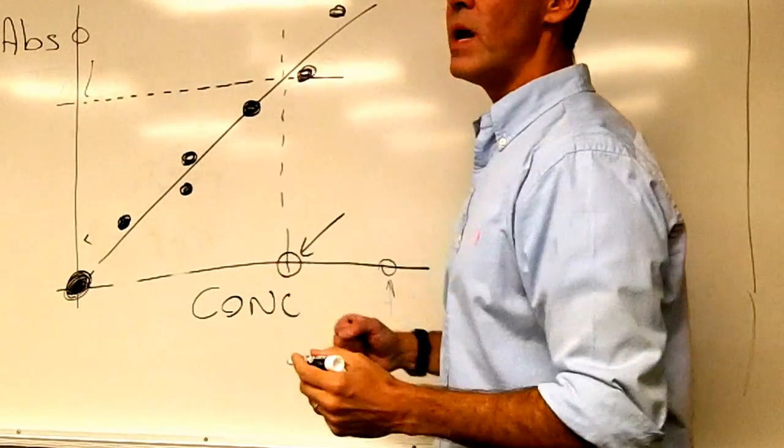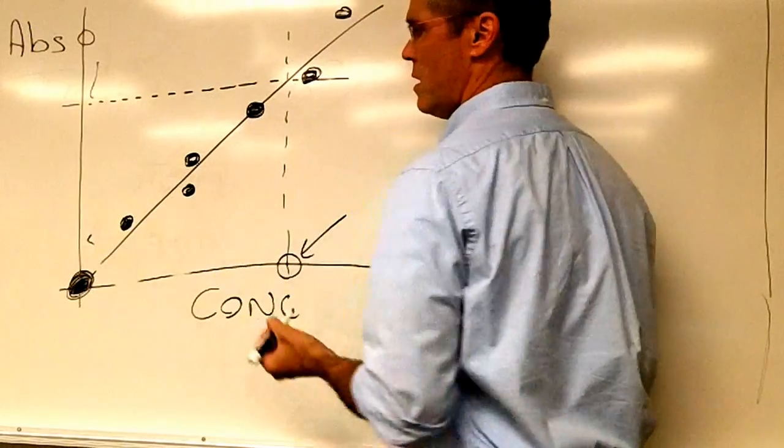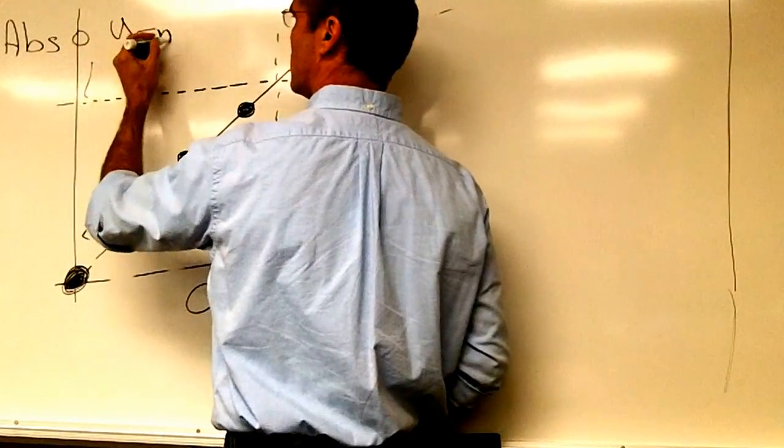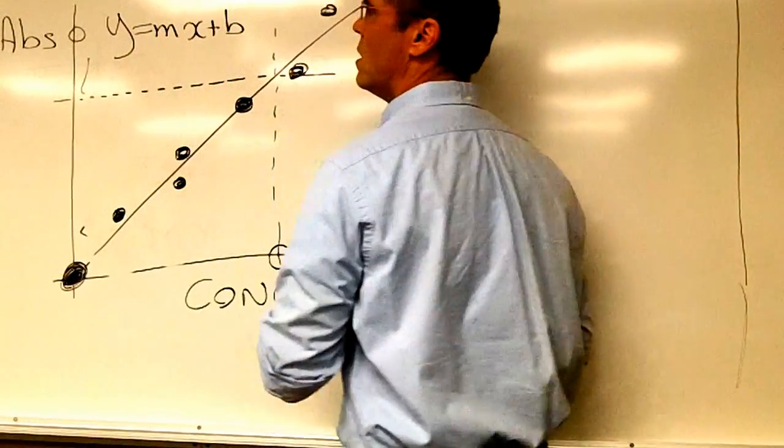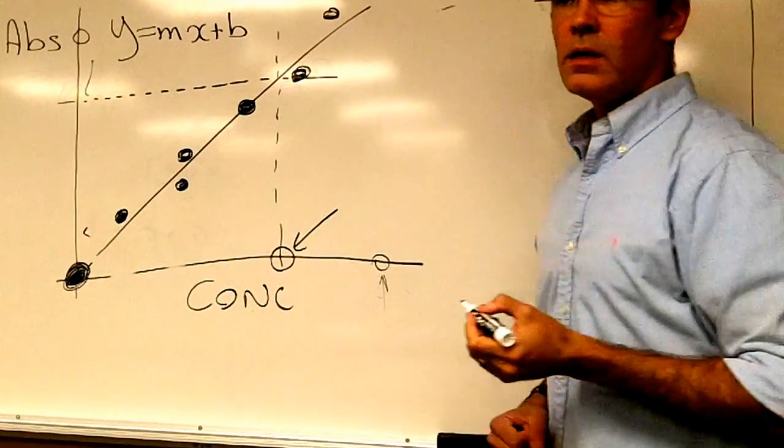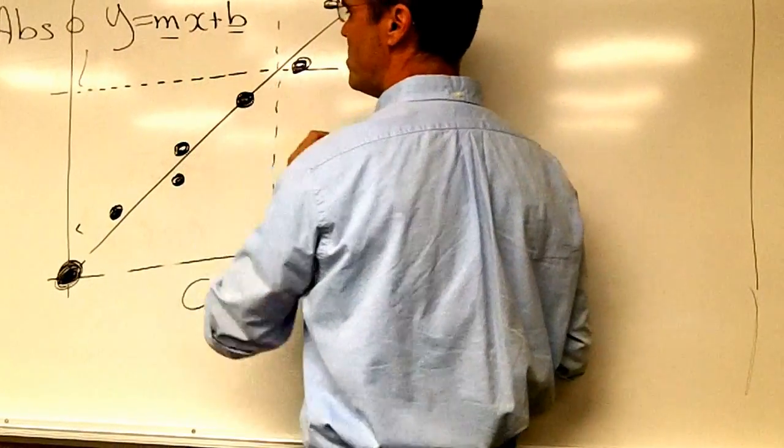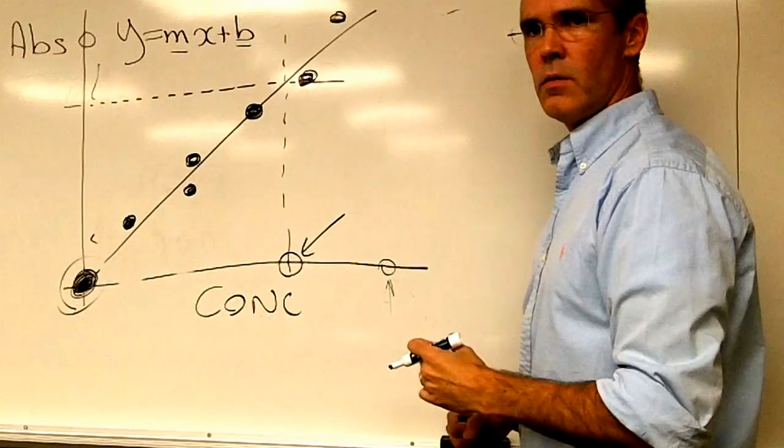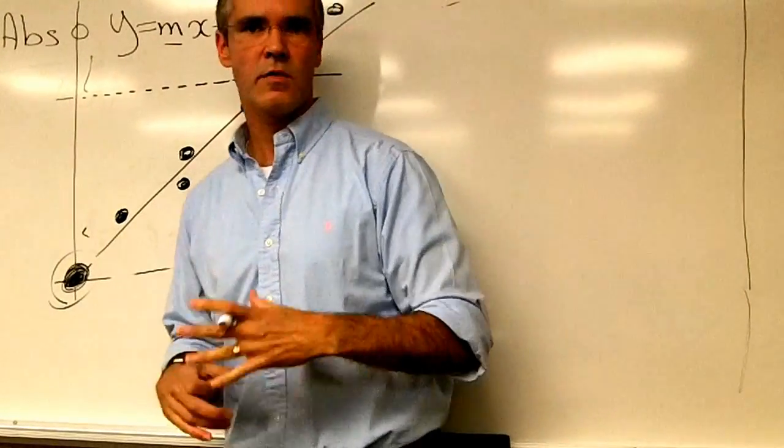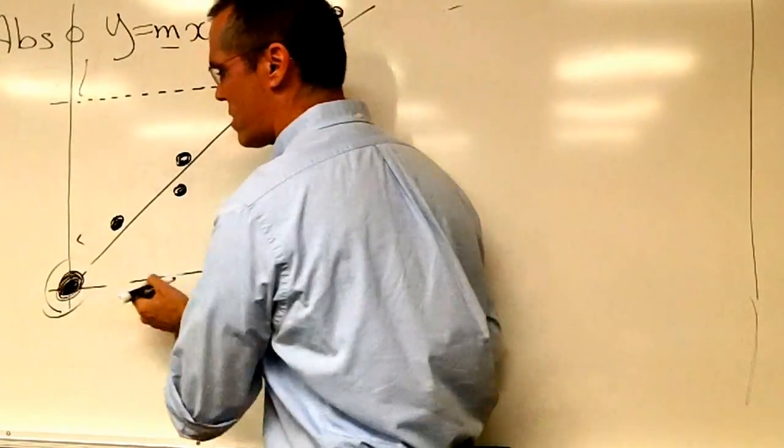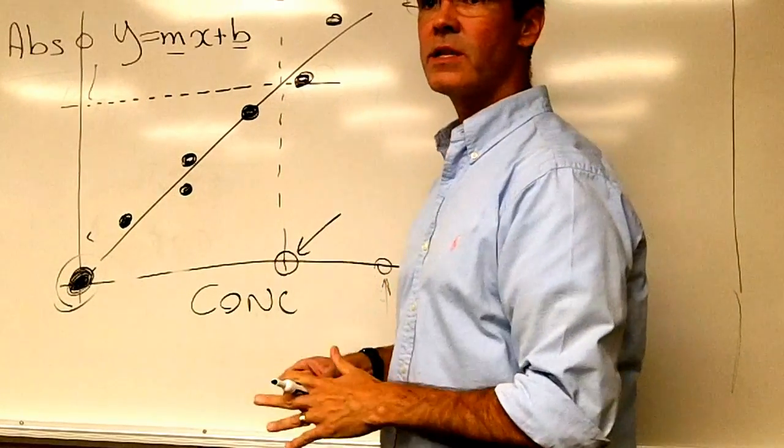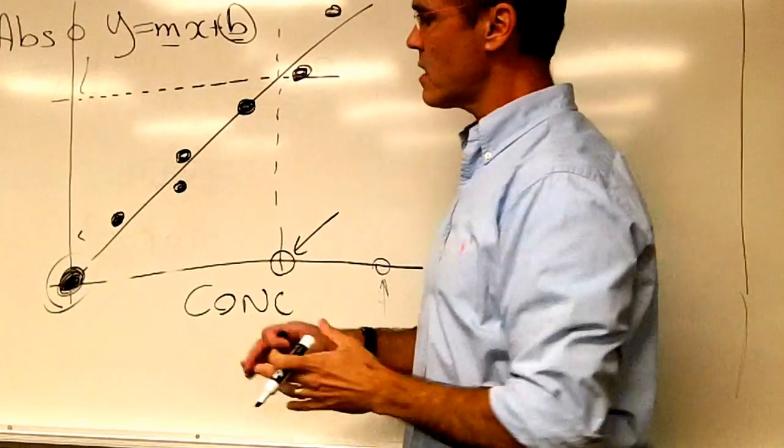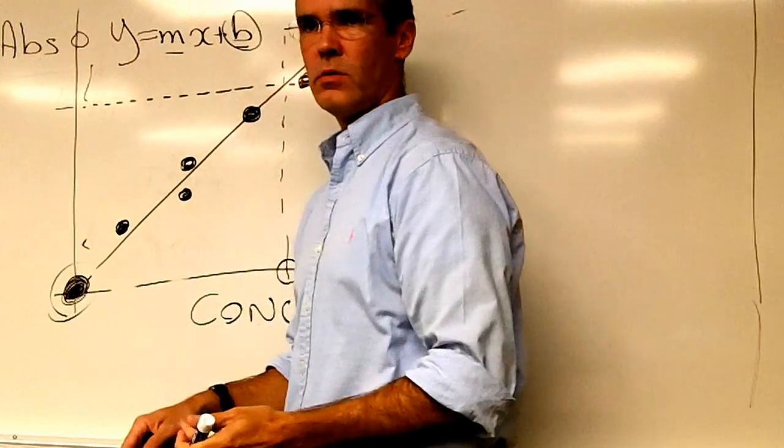And always remember that this line here has an equation, y equals mx plus b, where m is the slope, b is this point here, the origin, which is, in the best of worlds, would fall exactly where zero meets zero. But it doesn't happen like that. So you would have a value added to this. That's usually pretty close to zero.